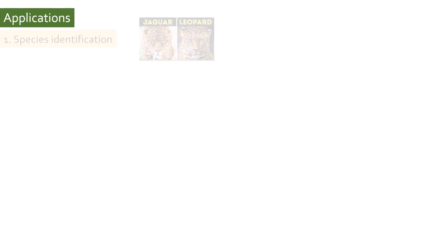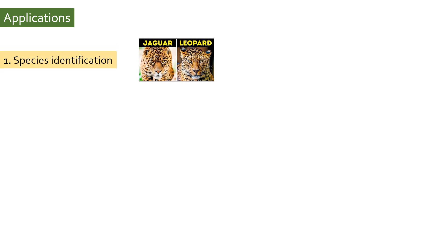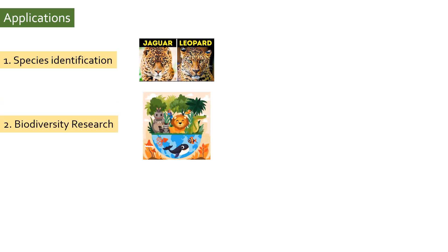Now let's see some of the useful applications of DNA barcoding. With DNA barcoding, one can quickly and accurately identify the species of an unknown organism even if it is difficult or impossible to do so based on its morphological appearance. DNA barcoding is also helpful in estimating biodiversity, species richness, speciation, and evolution by comparing DNA barcodes across different species.